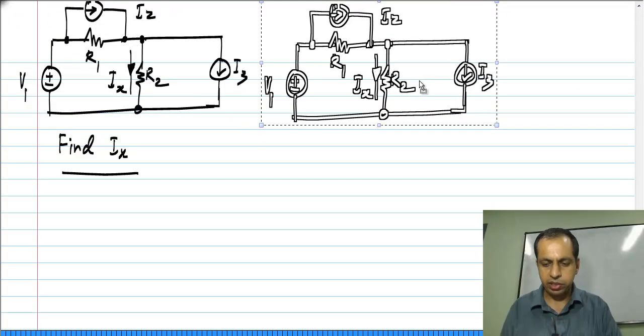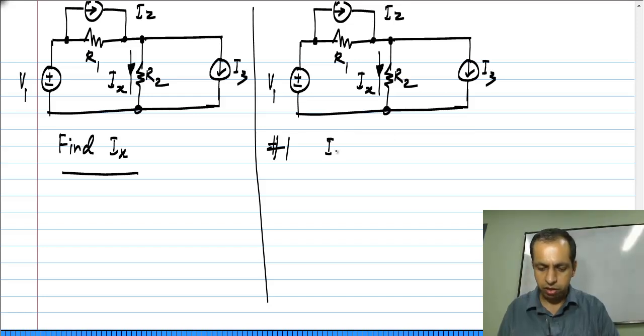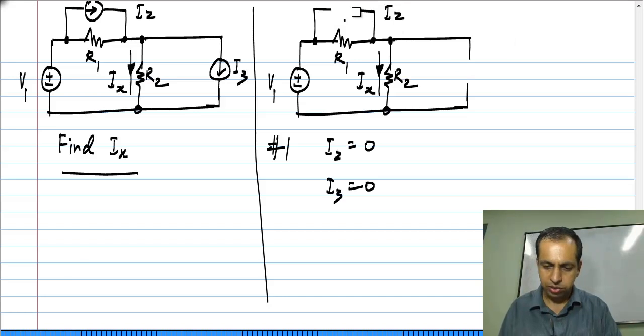I take the exact same circuit, but first in the first step I have only V1 and set I2 to 0 and I3 to 0. These two have become open circuits. Now the resulting circuit is a single loop circuit with V1 applied across the series combination of R1 and R2.